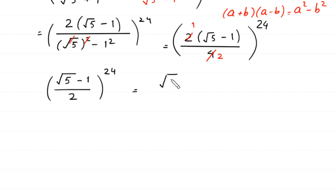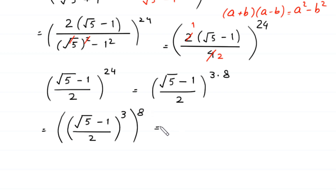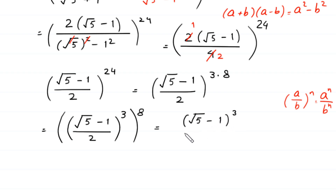Next, we can write 24 as 3 times 8. So the expression becomes (square root of 5 minus 1) divided by 2, whole cubed, and then whole to the power 8. Using the algebraic identity (a over b) to the power n equals a to the power n over b to the power n, the power 3 applies to both square root of 5 minus 1 and 2, giving (square root of 5 minus 1) cubed divided by 2 cubed, whole to the power 8.